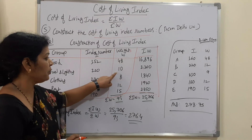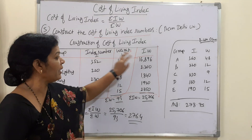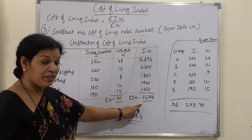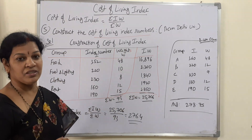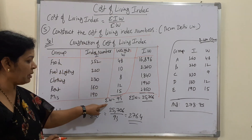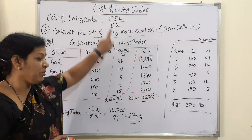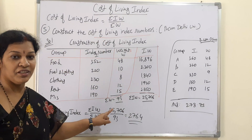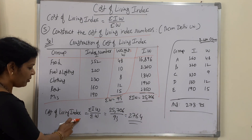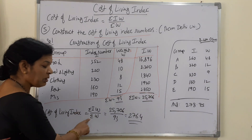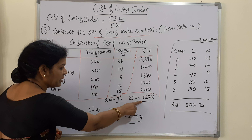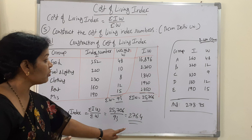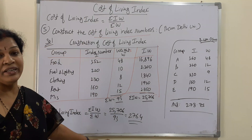Similarly, 220 multiplied by 10 gives 2,200, and so on. Totalling up the IW column gives Sigma IW equal to 25,706. Totalling the weights gives Sigma W equal to 93. Applying the formula, the cost of living index number equals 25,706 divided by 93, which gives 276.4.